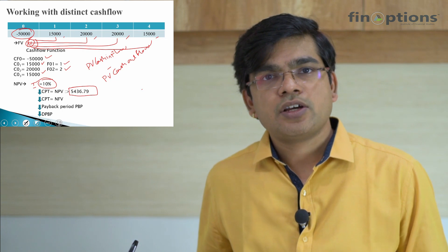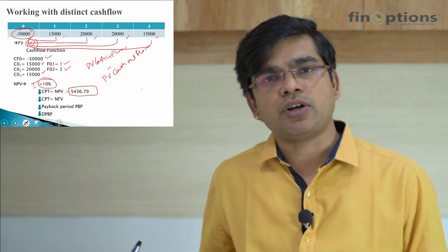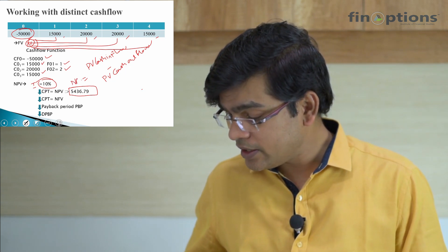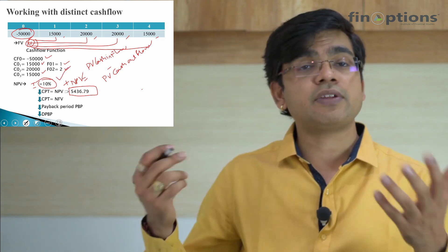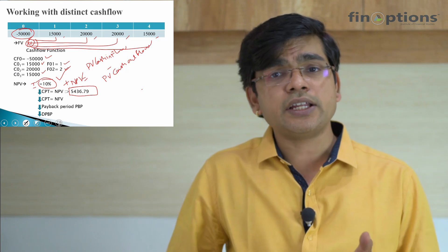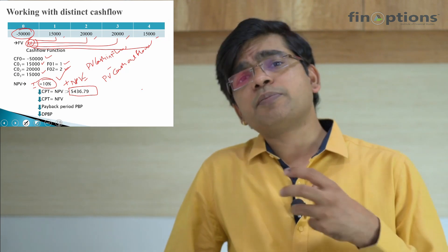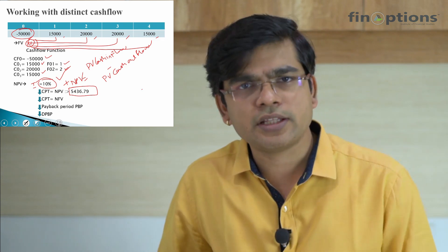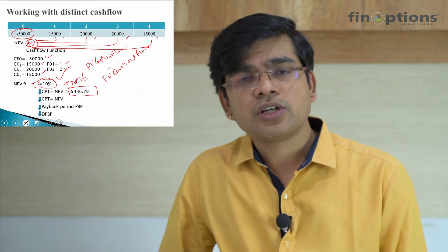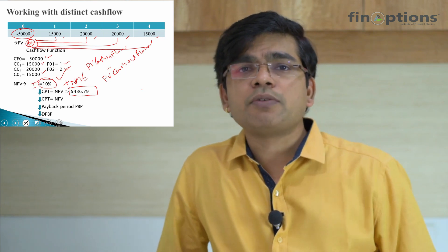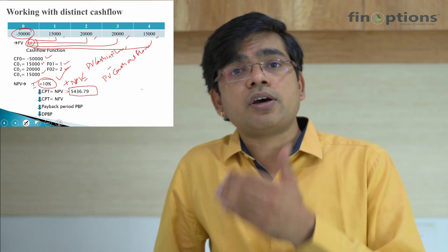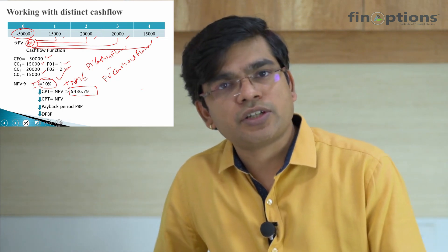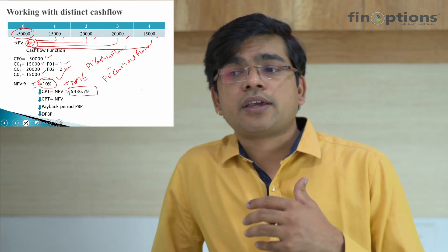Majority of distinct cash flow calculations can be done via the CF function of the calculator. The more important part from a decision-making perspective is: if the present value of cash inflows is greater than the present value of cash outflows, the NPV is positive, and the rule is — if NPV is positive, go ahead with the project; if NPV is negative, say no. Another way to look at it: consider the PV of cash inflows as the value you assign to the project. If the market value is less than your assessed value based on required return, you proceed, and that's where the NPV positive rule comes in.